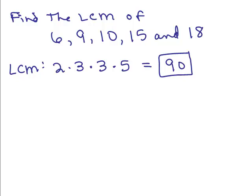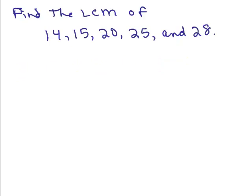Isn't this fun and easy and cool? By the way, this is harder than anything they ever give you in a book — if you can do these, you've really got it. Here we go: find the least common multiple of 14, 15, 20, 25, and 28. See if you can do this on your own by putting it on pause first.